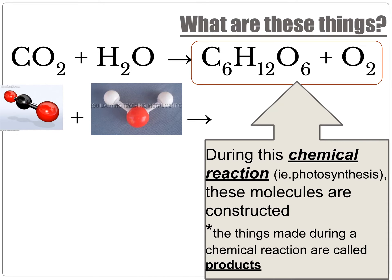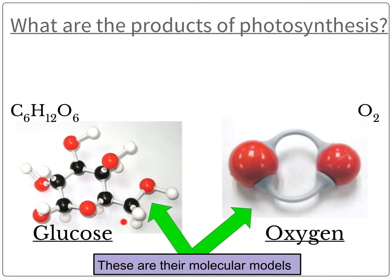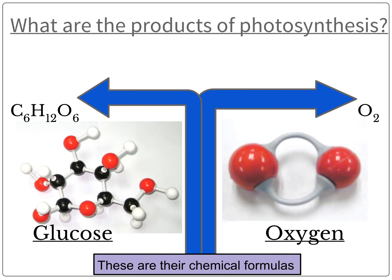Now we're going to take a look at the other side of this chemical reaction. During photosynthesis, these molecules are constructed — right here we have the glucose and the oxygen. The things made during a chemical reaction are called products. So what are the products of photosynthesis? Glucose and oxygen. Here are the molecular models and here are the chemical formulas: C6H12O6 and O2.